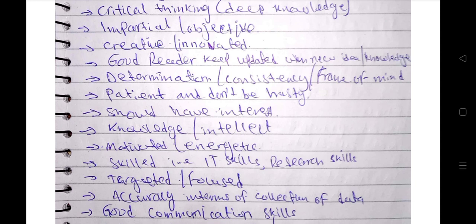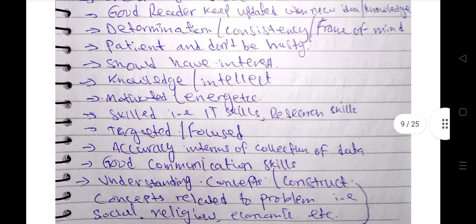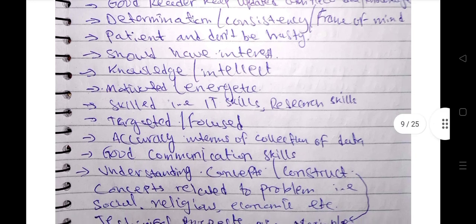Then obviously knowledge and intellect of researcher is important. Motivation and energetic, yes, a researcher should be motivated and energetic. And skills, obviously skills are required. It's a technical subject, so technical skills are required: IT skills, you have to use computer, internet, research search skills. A researcher should have right frame of mind, you should have target and focus and concentration. That is very important.